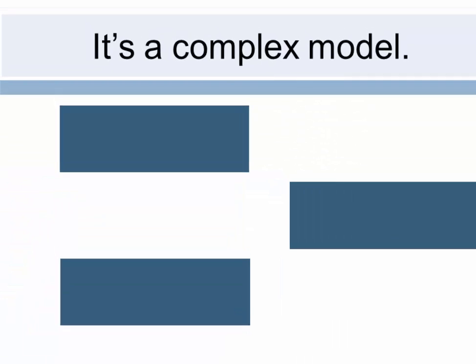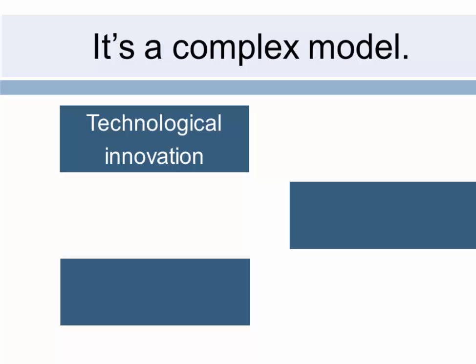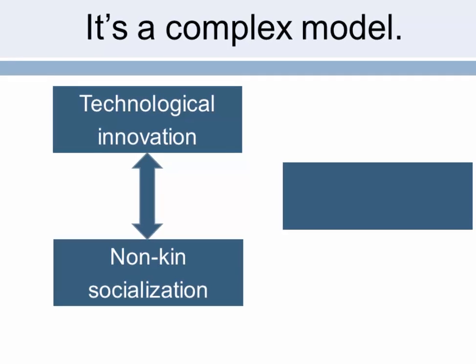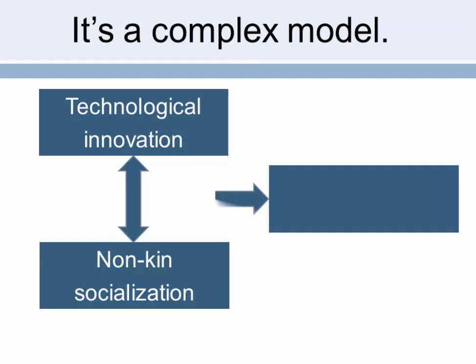The dual inheritance model is considerably more complex than that. It suggests an interaction between the rate of technological innovation and the degree to which we live among non-kin, and the importance of oblique transmission like education. It is in this context of rapid technological innovation and living our lives among non-kin that we end up with the regime of low fertility.